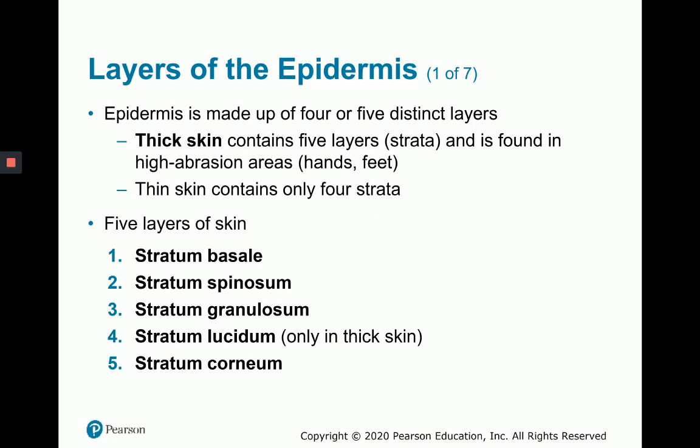Next we'll go through the layers of the epidermis, keeping in mind those four cell types. We'll be looking at thick skin, which contains five strata or five layers and is most applicable for high-abrasion areas like the hands and feet. Most of the body contains thin skin, which has only four layers. Thick skin has five layers, thin skin has four, and the layer missing in thin skin is the stratum lucidum.